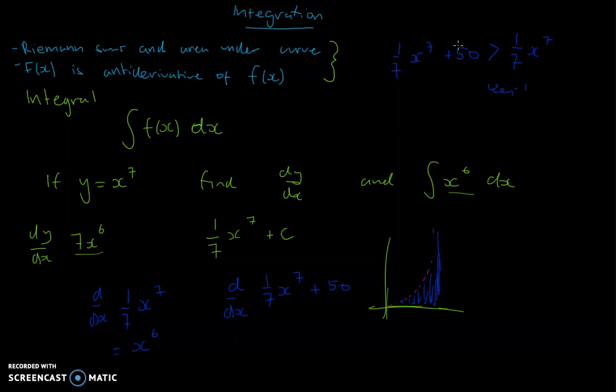But we wouldn't know that that existed, because when you differentiate this, the 50 goes to 0. The derivative of a constant is just 0, so it'll just go to x to the power of 6 again. So if all you're given is x to the power of 6, you don't actually know everything about this antiderivative, because it could have this constant on the end.